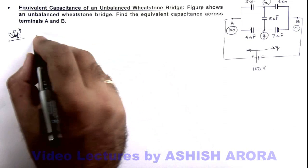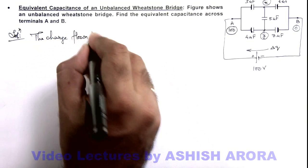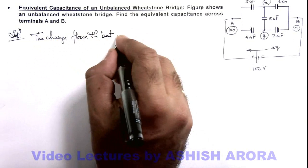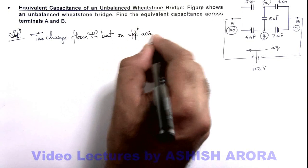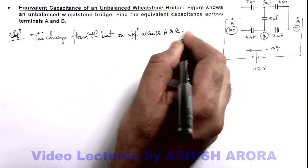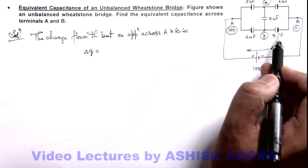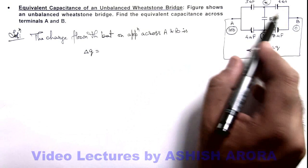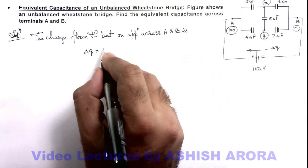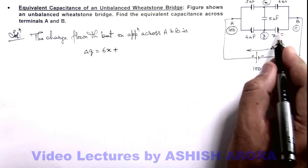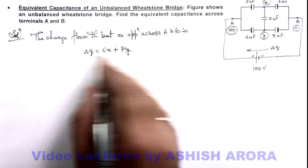So here we can write the charge flown through battery on application across A and B is, this charge delta q we can write the charge on this plate plus charge on this plate, or the magnitude of that. So on this capacitor the charge will be CV where C is 6 and potential difference is x minus zero, so it is 6x, plus on this capacitor the charge will be 7y.